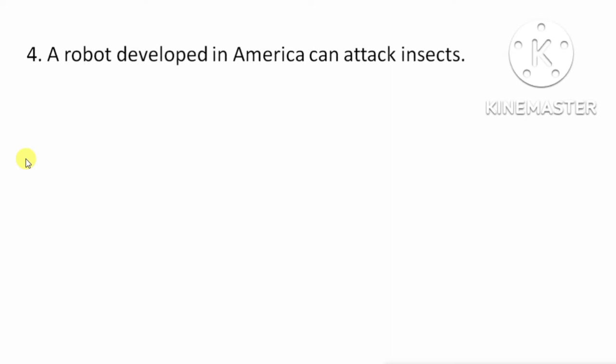Next question: a robot developed in America can attack insects. Means, एक robot जो अमेरिका में develop हुआ है वो insects पर attack कर सकता है। यह False है क्योंकि अमेरिका में develop नहीं हुआ था, बल्कि England में develop हुआ था।